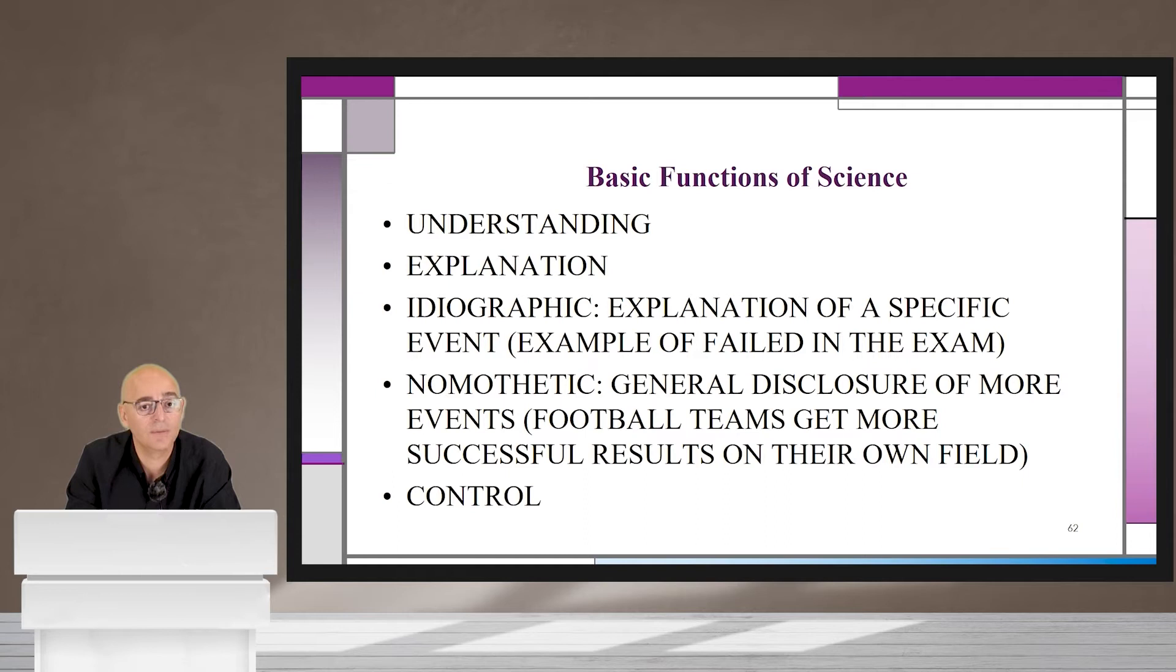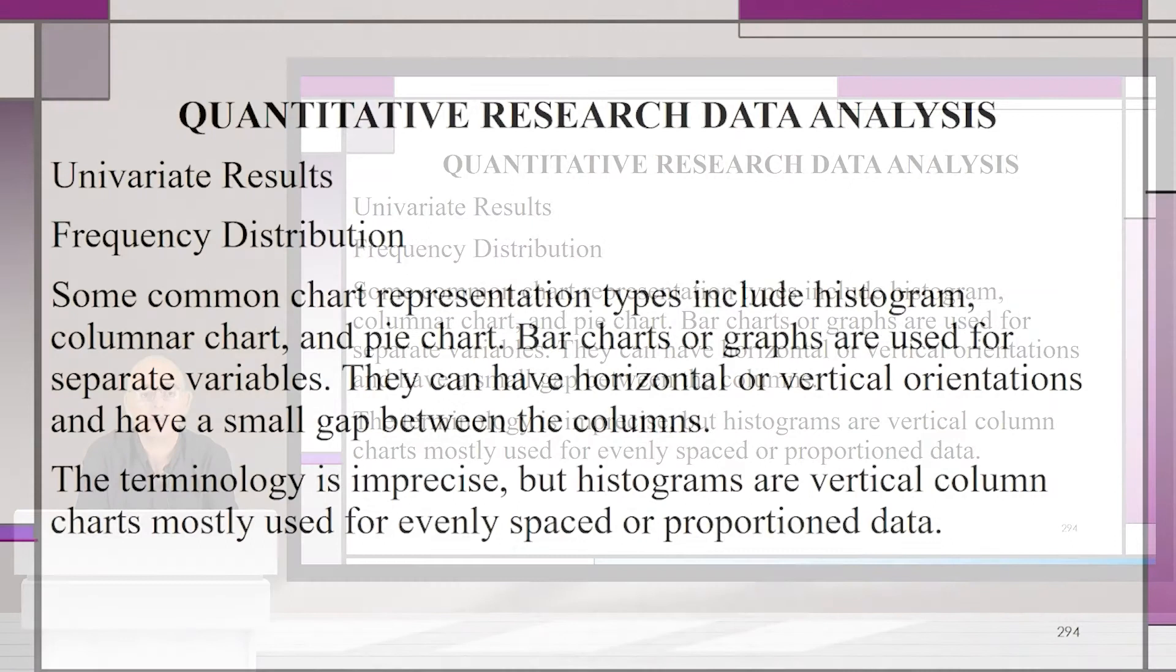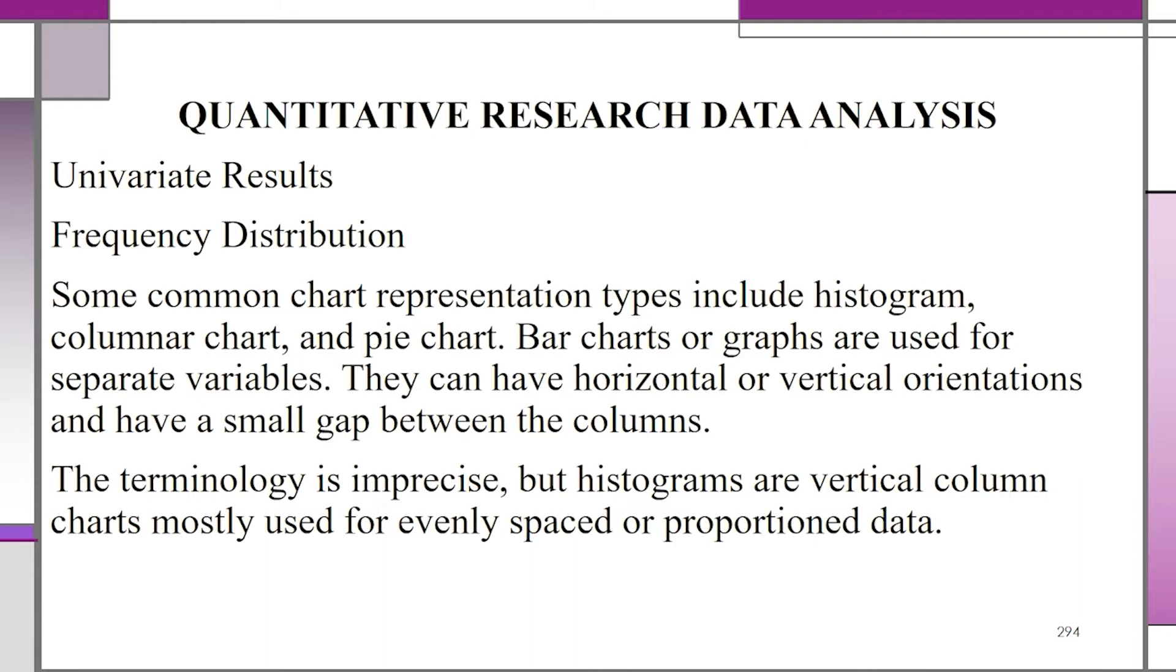Some common chart representation types include histogram, columnar chart, and pie chart. Bar charts or graphs are used for separate variables. They can have horizontal and vertical orientations and have a small gap between the columns. The terminology is imprecise, but histograms are vertical column charts mostly used for evenly spaced or proportioned data.